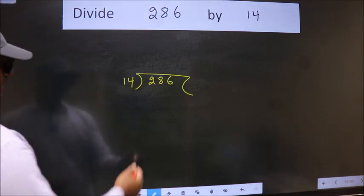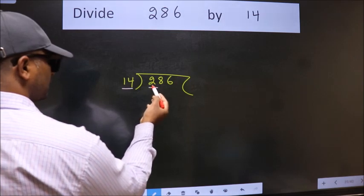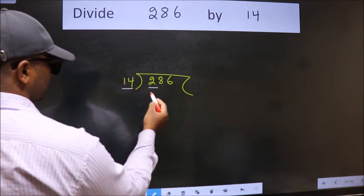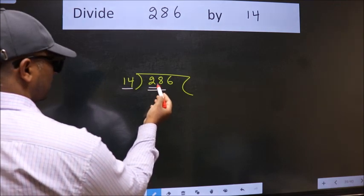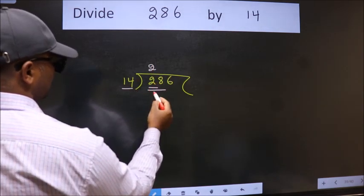Next, here we have 2, here 14. 2 is smaller than 14, so we should take 2 numbers, 28. When do we get 28 in 14 table? 14 times 2 is 28.